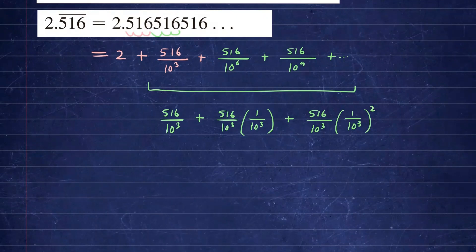So that's going to give us the next term, which will be this one right here and so on. So you start to see that your common ratio, as we call it R in the geometric series, happens to be in this case 1 over 10 to the 3rd power. And your A in our geometric series for this problem will be 516 over 10 to the 3rd power.